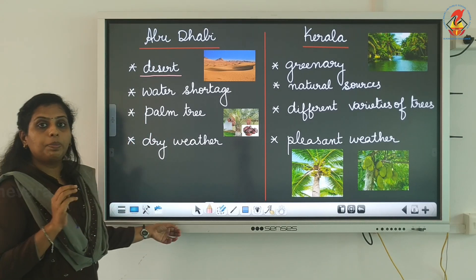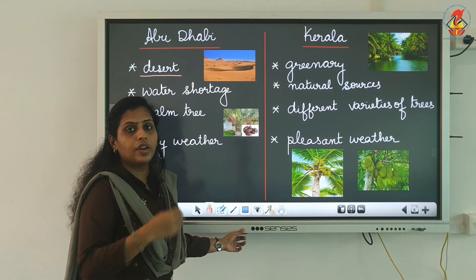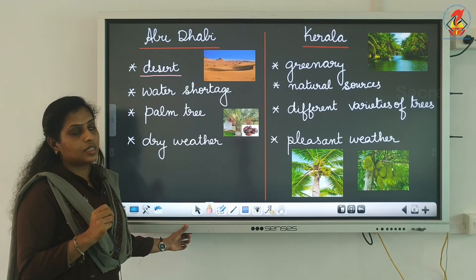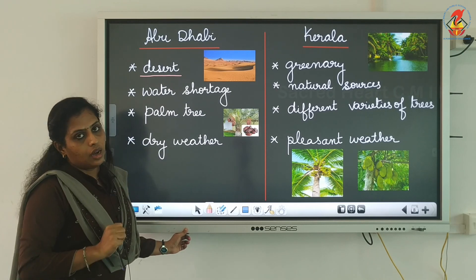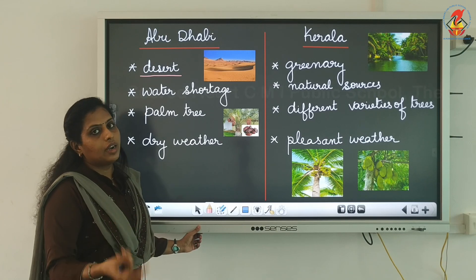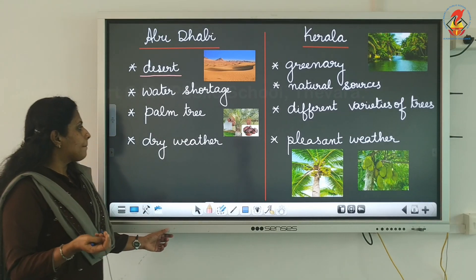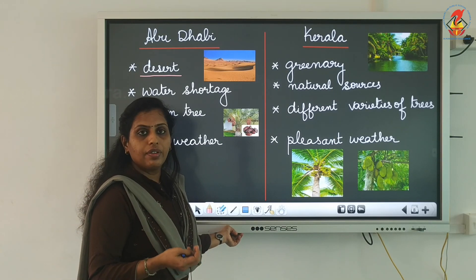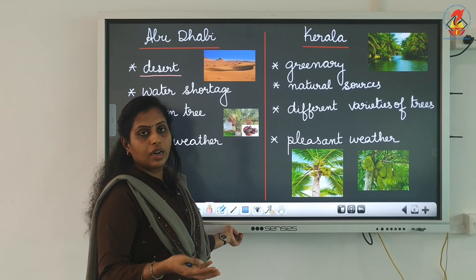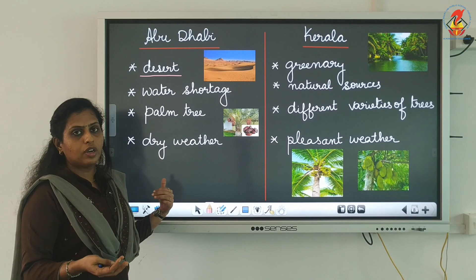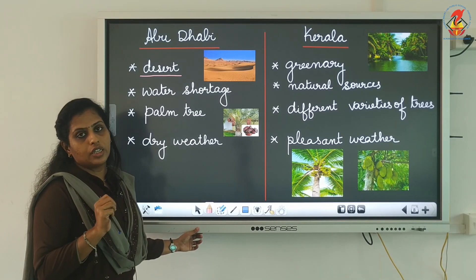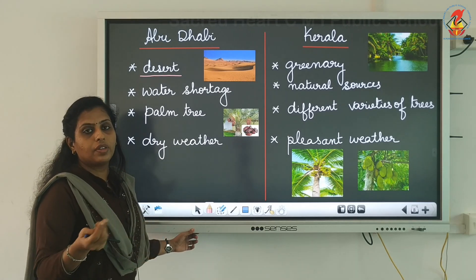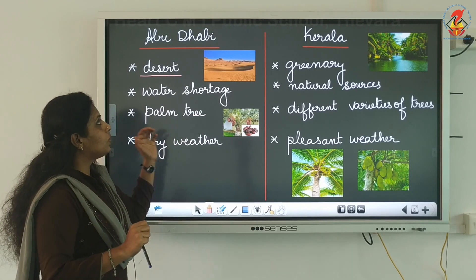In Abu Dhabi you can see only palm trees, but in Kerala there are many varieties of trees like coconut, jackfruit, papaya, and more — all because of the water availability. There is scarcity of water in Abu Dhabi, and without water, plants cannot grow. The weather in Abu Dhabi is very dry, but in Kerala we have a pleasant climate with rain and cool breeze. Even then, people in Abu Dhabi have constructed multi-storied air-conditioned buildings to cope with the harsh weather.